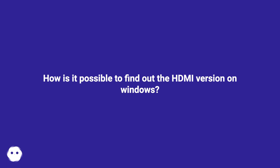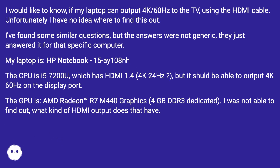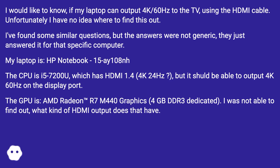How is it possible to find out the HDMI version on Windows? I would like to know if my laptop can output 4K/60Hz to the TV using an HDMI cable. Unfortunately I have no idea where to find this out. I found some similar questions, but the answers were not generic — they just answered it for that specific computer.